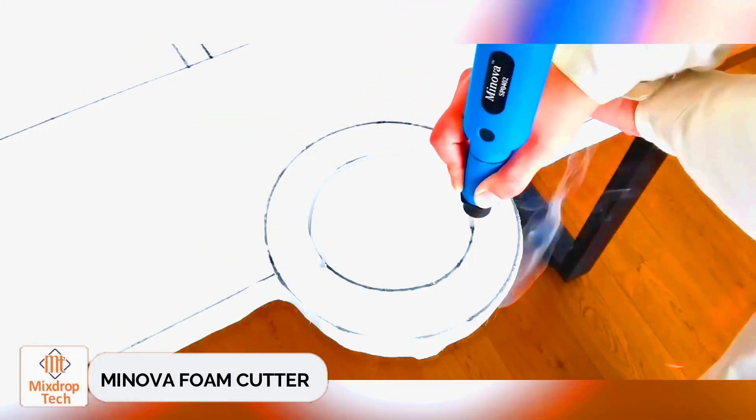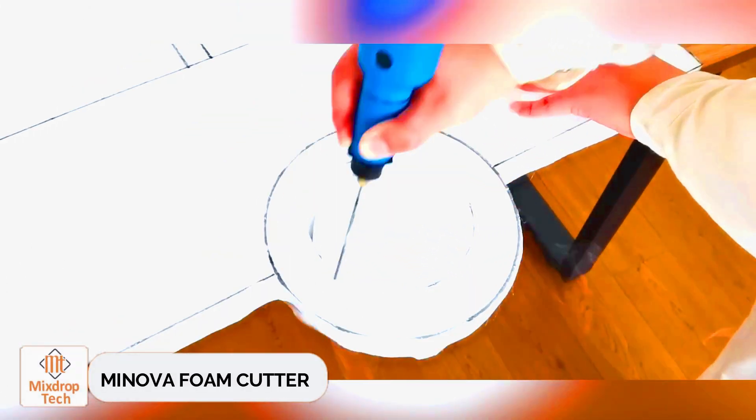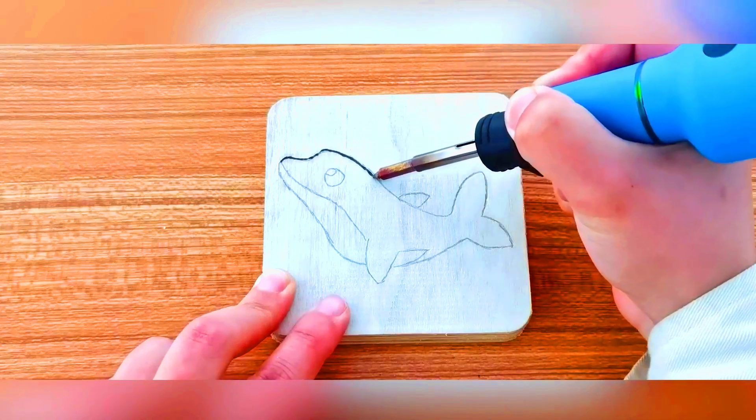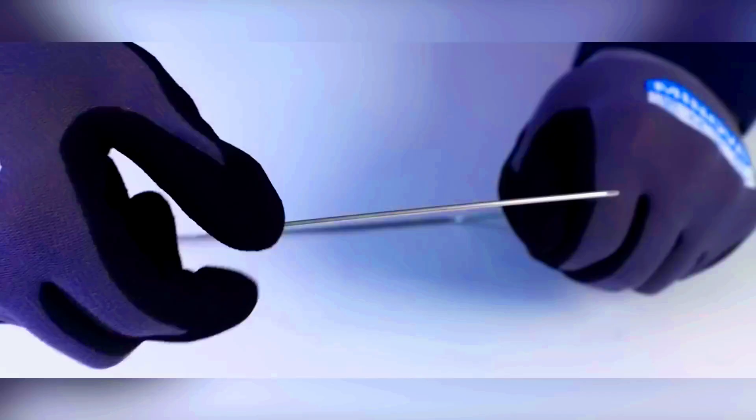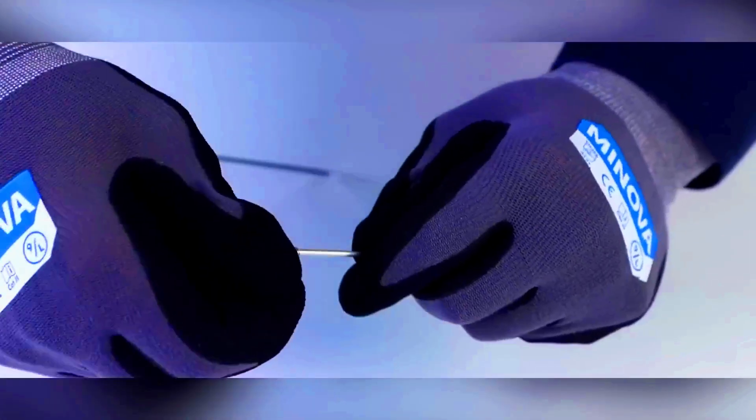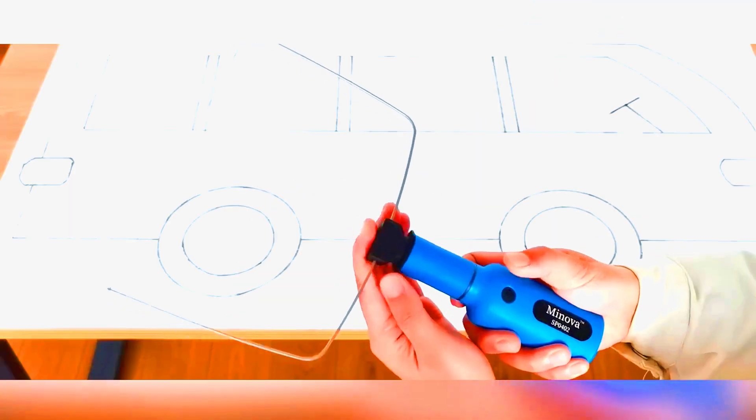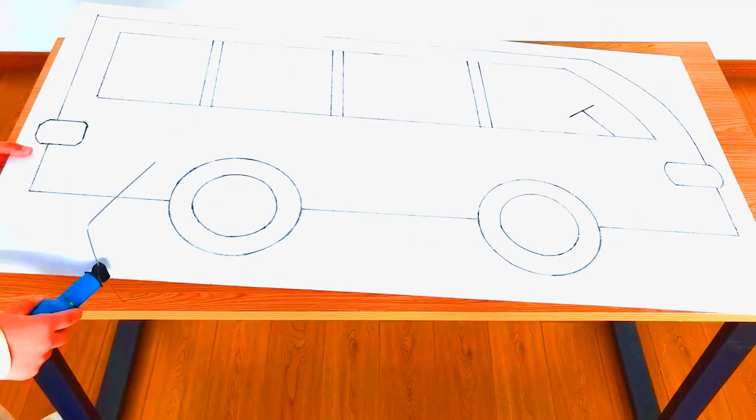Minova Foam Cutter. The Minova 4-in-1 Cutter comes with four attachments, making it perfect for various tasks. You can use it to create basic foam profiles, but also for engraving, preparing XPS insulation, and projects involving KT boards. Essentially, it's a cordless and highly versatile tool.